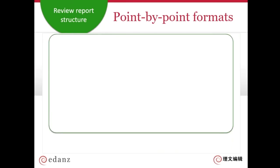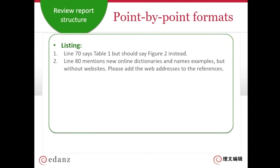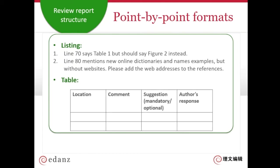In the point-by-point part you have two options depending on journal style. Sometimes you can just list in a numbered list your points with line numbers — for example: 'Line 70 says Table 1 but should say Figure 2 instead'; 'Line 80 mentions new online dictionaries but please add the web addresses to the references.' Some journals use a table format where you put the location in the first column, your comment in the second column, a suggestion, and indicate whether it's mandatory or optional, with a blank column for the author's response.